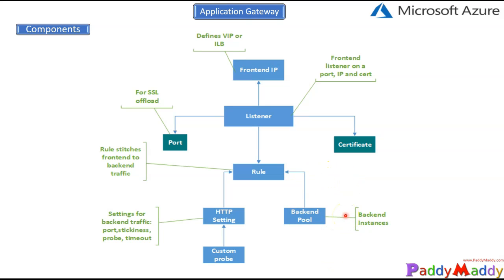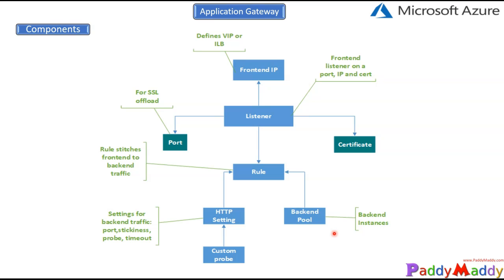Backend pools contain the resources that serve incoming requests. They can include network cards, virtual machine scale sets, public IPs, internal IPs, FQDNs, or multi-tenant backends such as App Services. For health probes, Application Gateway by default monitors the health of all resources in the backend pool and reports them as healthy or unhealthy based on their actual status.